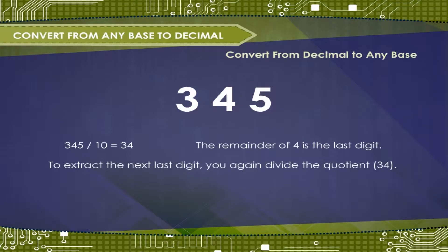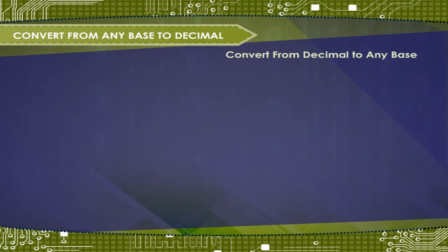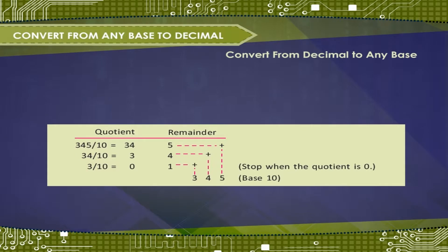To extract the next last digit, you again divide the quotient 34, and the remainder of 3 is the next last digit. Repeat this process until there is nothing left, then you stop.